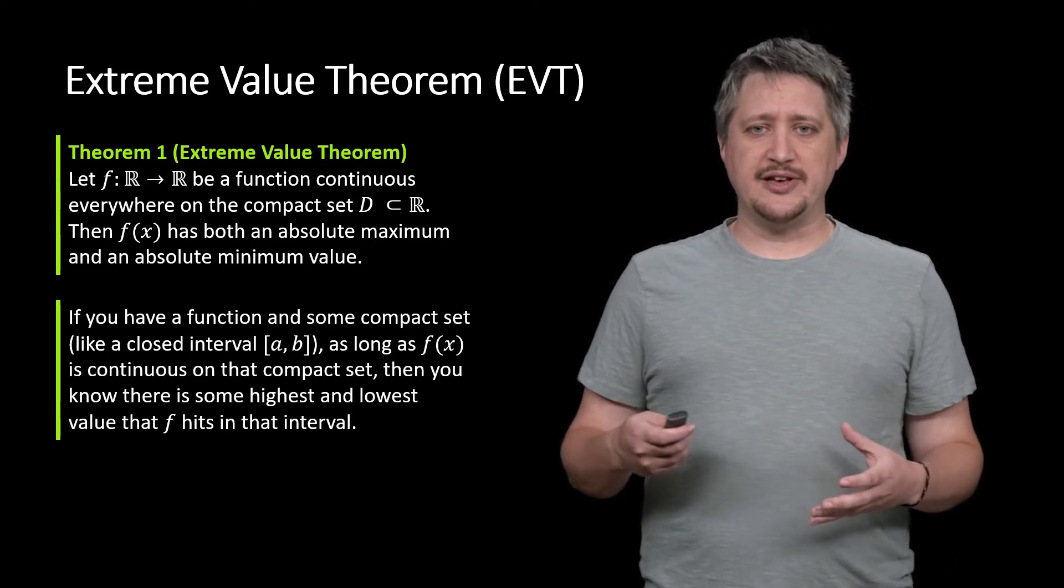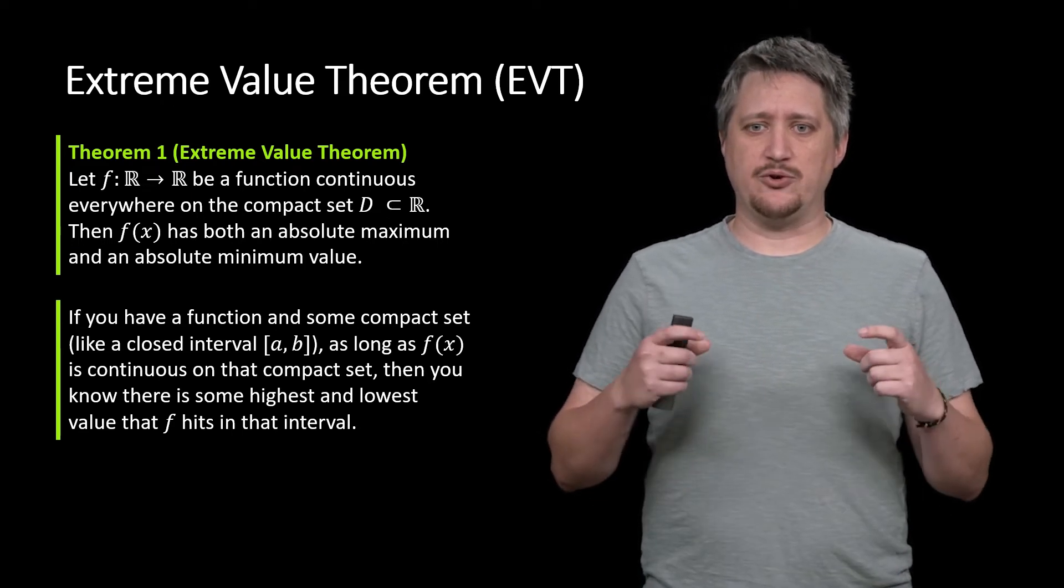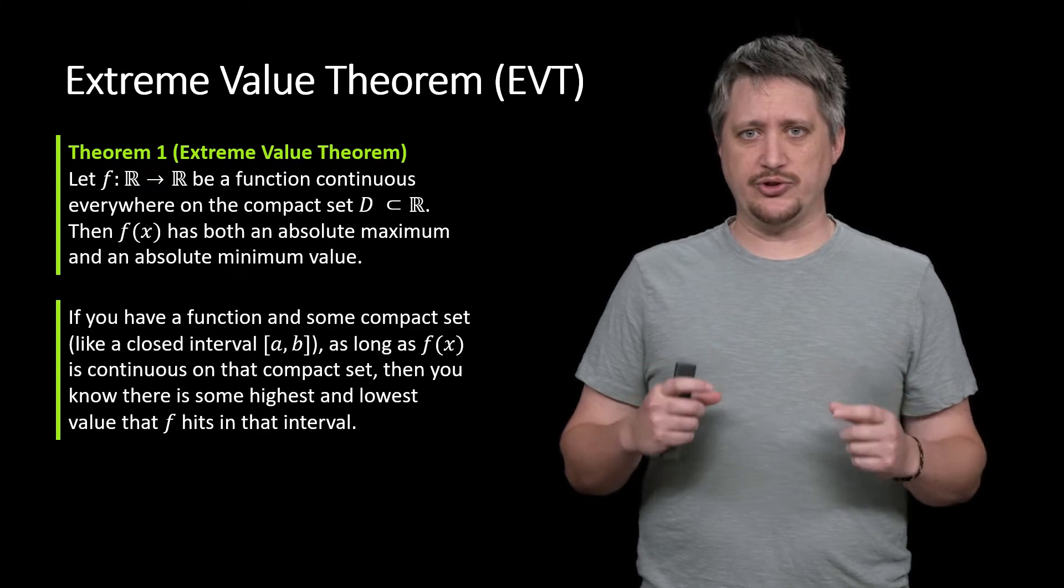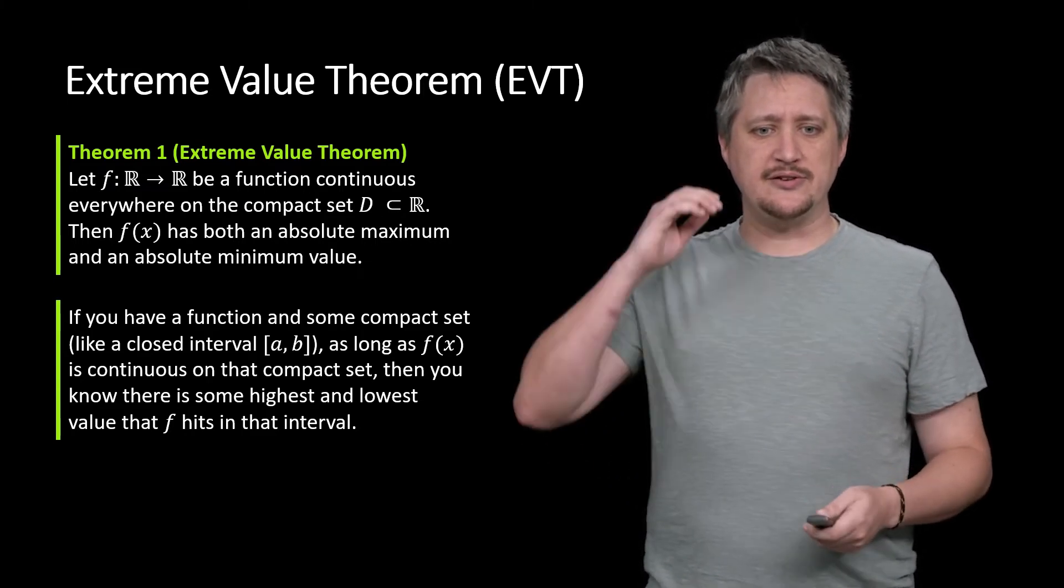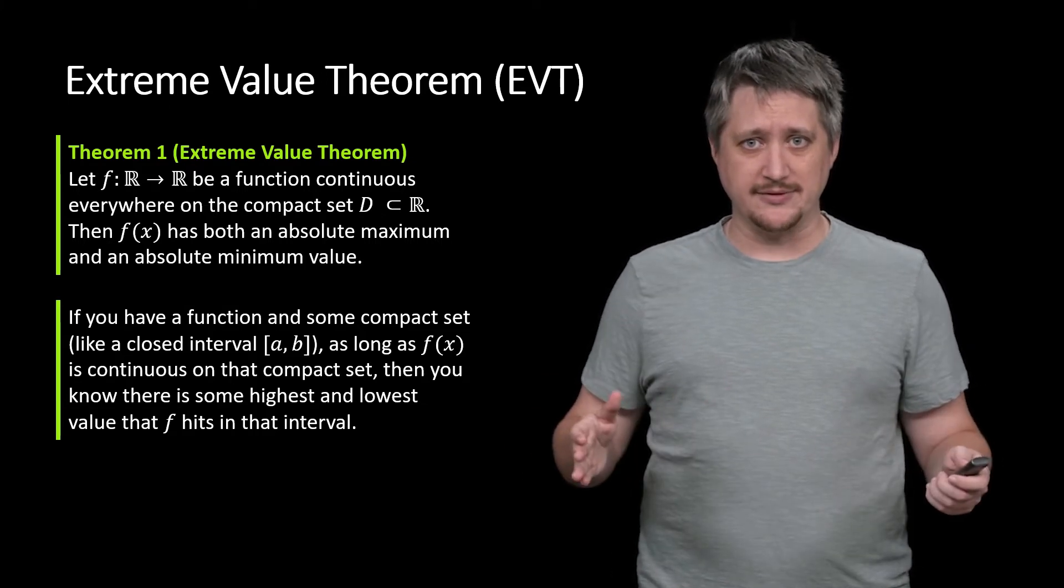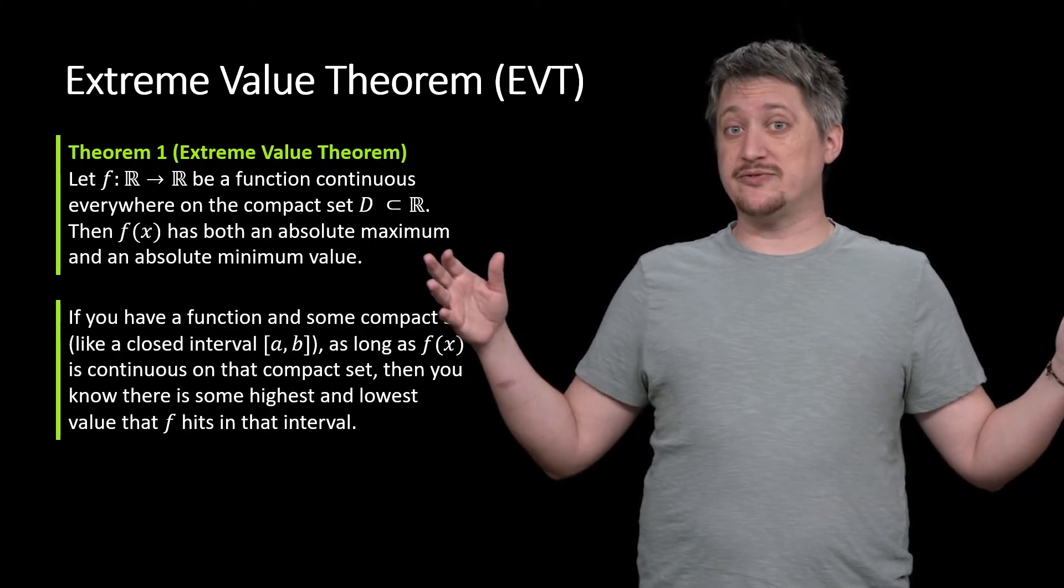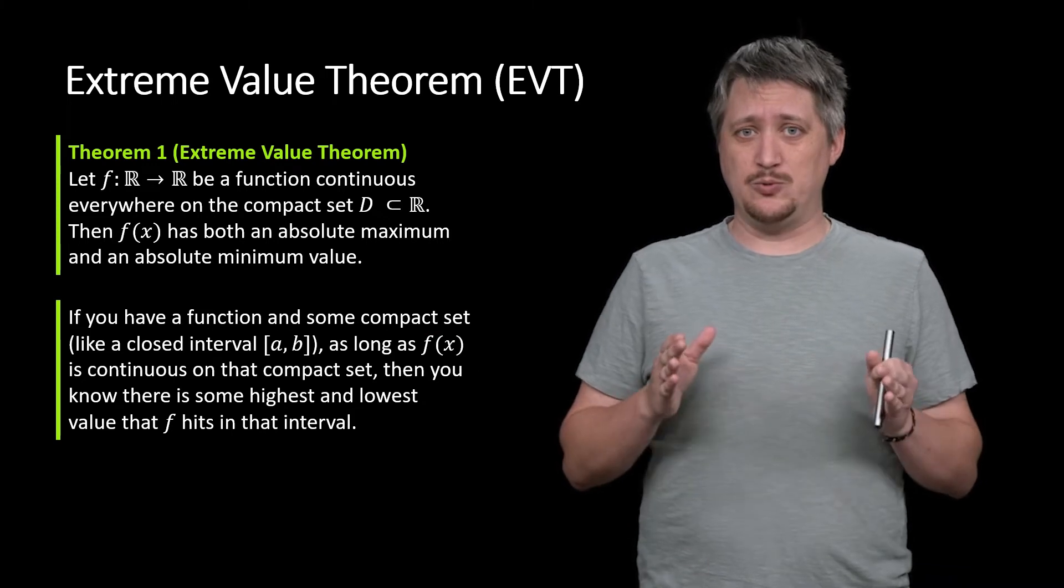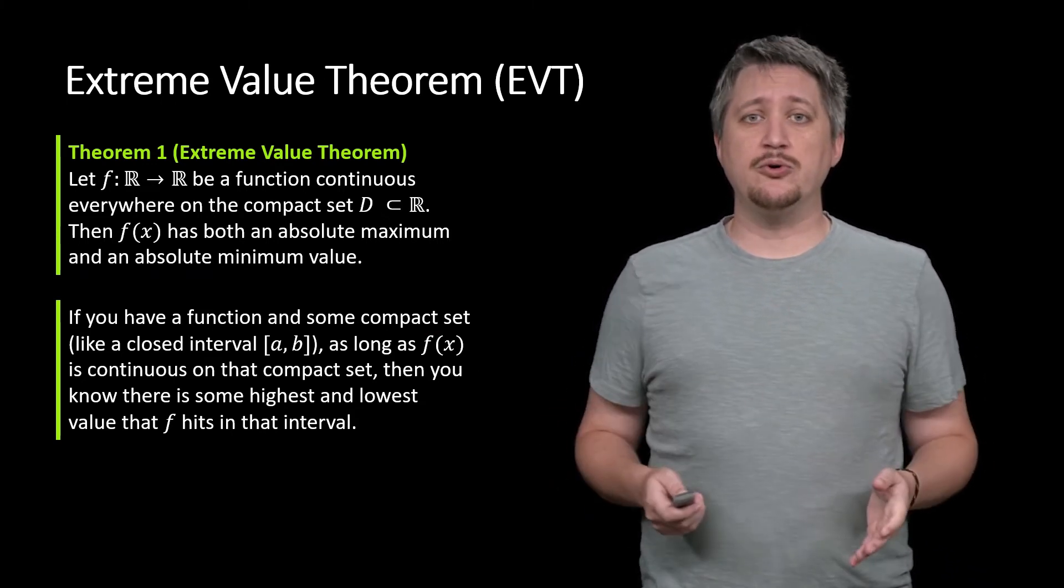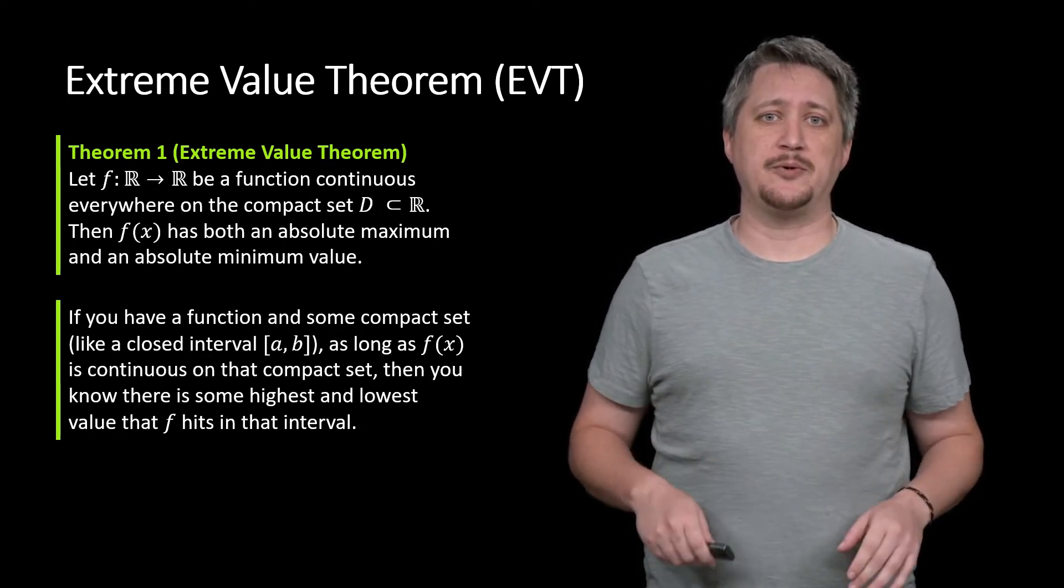Essentially, what this is saying is that if you have a function and you're only looking at some compact set, like some closed interval, which is usually what we're doing, then as long as F is a continuous function on that entire span, doesn't have to be continuous everywhere, as long as it's continuous within the compact set we care about, then you know that it has to reach some maximum and some minimum.